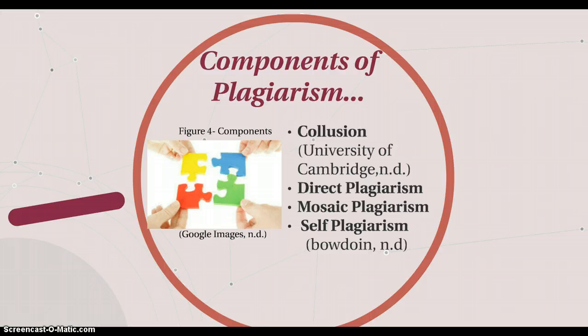The second type of plagiarism is direct plagiarism. This involves copying another student's work word for word without using quotation marks or referencing the student that you took the idea or opinion from. This is seen as breaking the academic integrity code as the student is being dishonest and cheating.